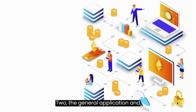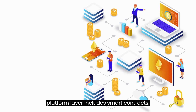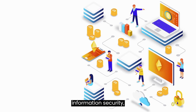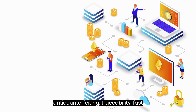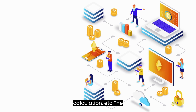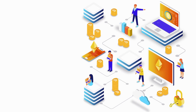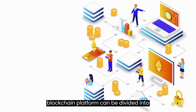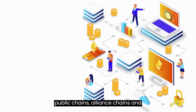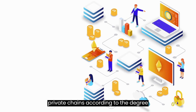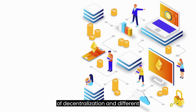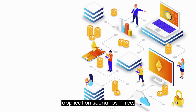The general application and platform layer includes smart contracts, information security, anti-counterfeiting traceability, fast calculation, etc. The blockchain platform can be divided into public chains, alliance chains, and private chains according to the degree of decentralization and different application scenarios.